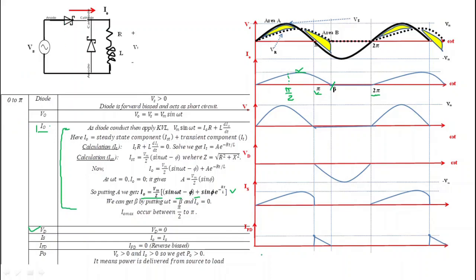The voltage drop across the main diode is zero from 0 to π, since the diode acts as a short circuit. The source current is equals i0 because the main diode is short circuited. The current across the freewheeling diode is zero during 0 to π, since it is reverse biased and acts as an open circuit. So from 0 to π, the supply current equals the output current.